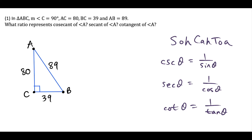What's up, I'm Vin and today I want to show how to use the reciprocal trig functions. So we're going to go through two questions here. We have triangle ABC, and the reciprocal trig functions: CSC stands for cosecant, SEC stands for secant, and COT stands for cotangent. Each of these three functions are the reciprocals of sine, cosine, and tangent.